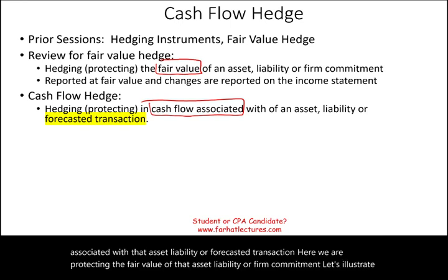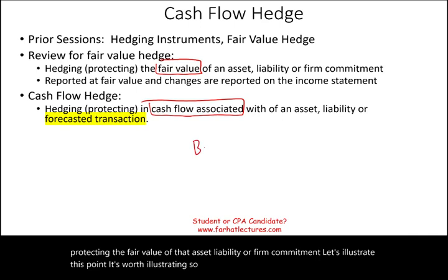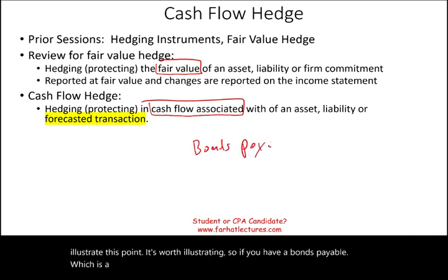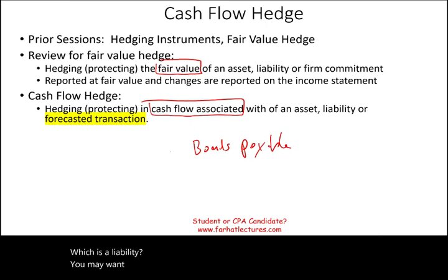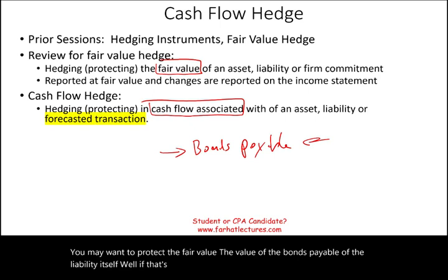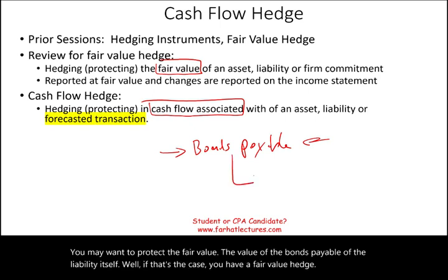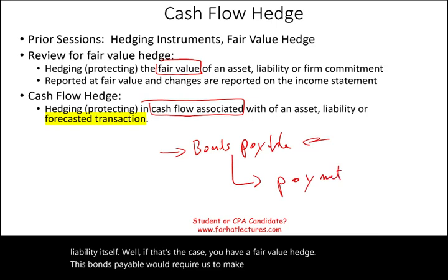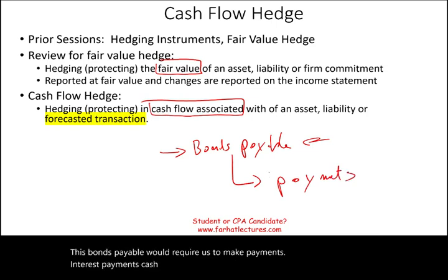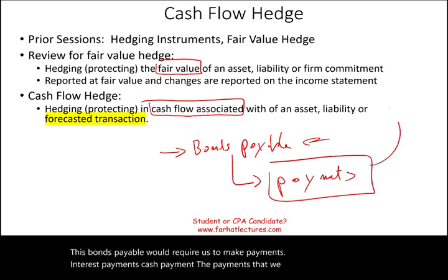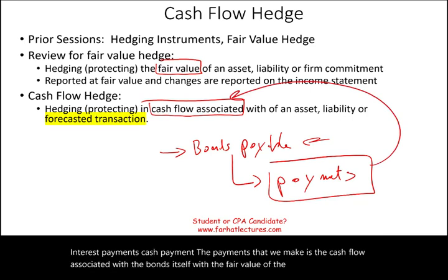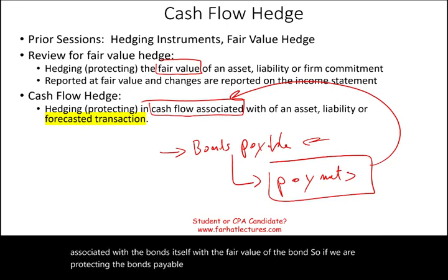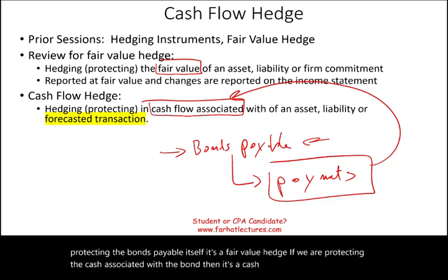Let's illustrate this point. If you have bonds payable — a liability — you may want to protect the fair value of the bonds payable itself; that is a fair value hedge. Bonds payable also require you to make cash interest payments. Those payments represent the cash flow associated with the bond. If you are protecting the cash flow associated with the bond, then it's a cash flow hedge.